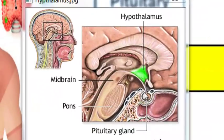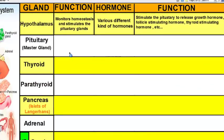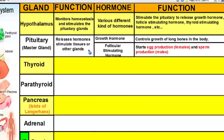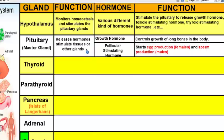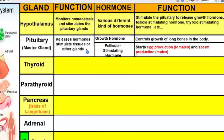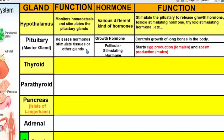The pituitary gland is called the master gland because it controls a lot of the other glands or tissues. Two examples of hormones made by the pituitary gland are growth hormone, which controls the growth of long bones in the body — so as you grow taller, that's growth hormone at work — and follicle-stimulating hormone, which tells the ovaries in females to produce eggs and the testes in males to produce sperm cells.